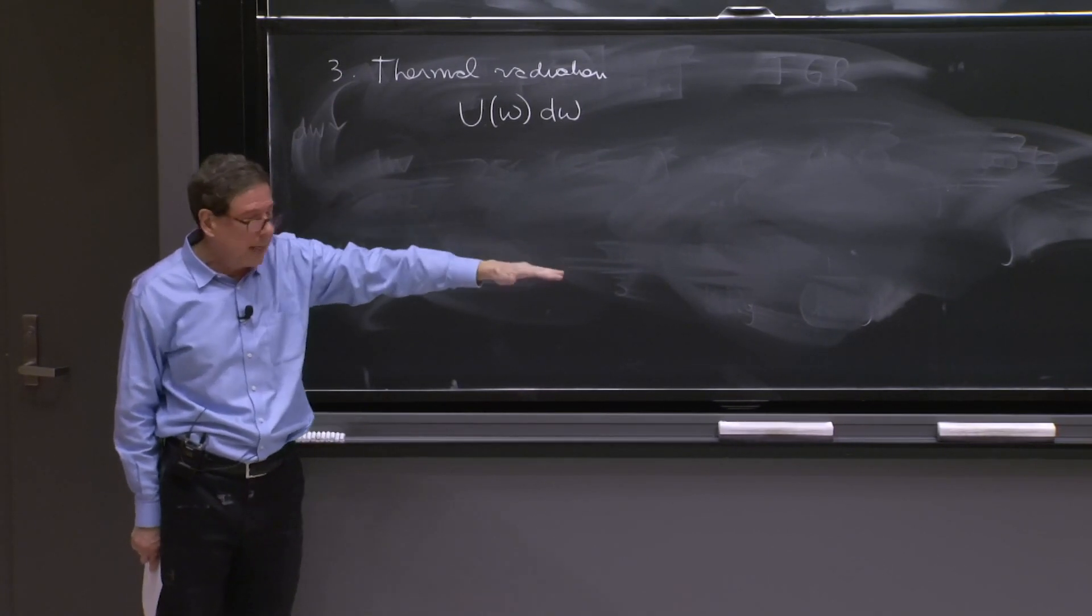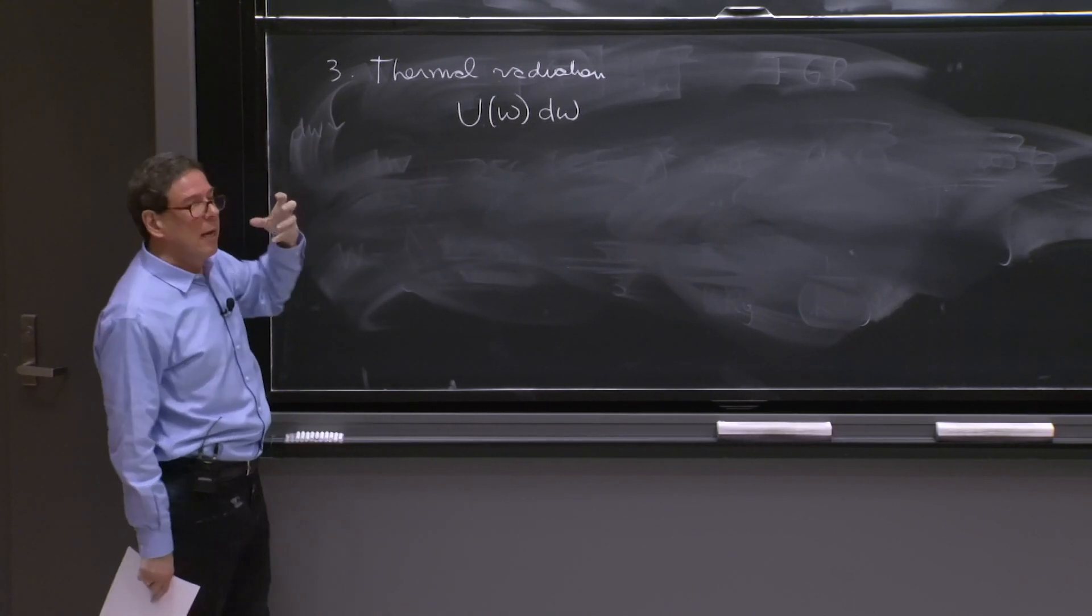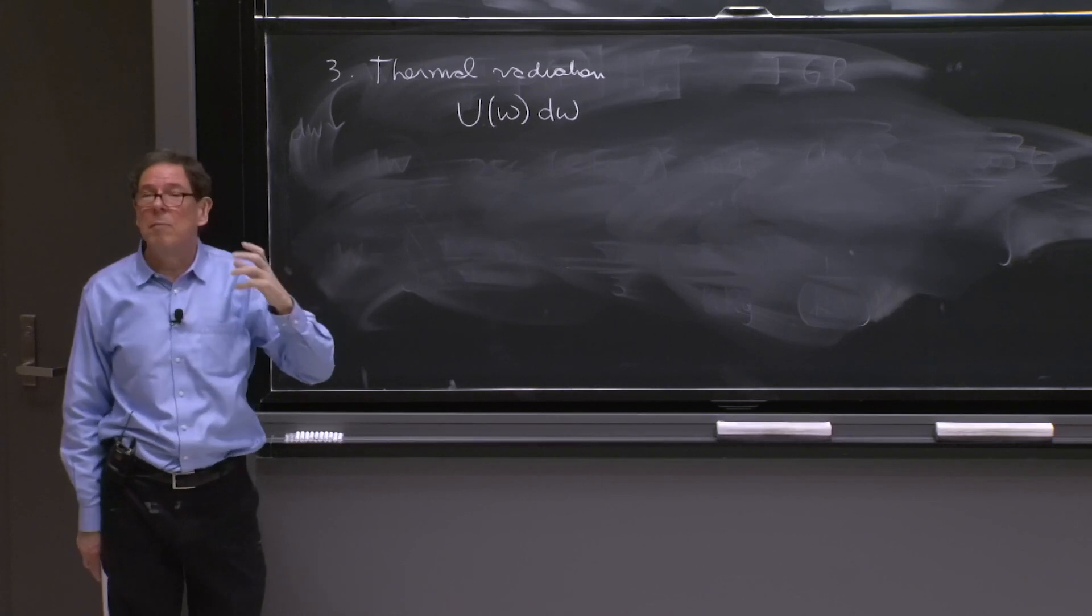So you have photons of all energy. So if you want a description of what's going on in black body radiation, you can consider the energy in the photons in a frequency range.